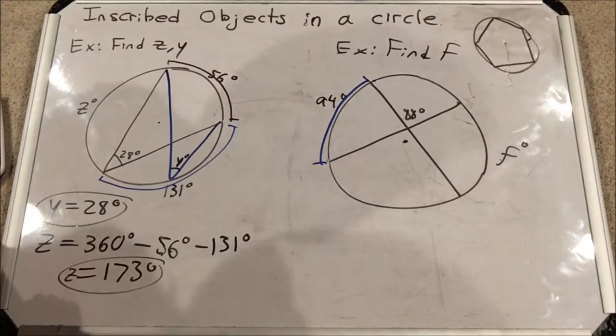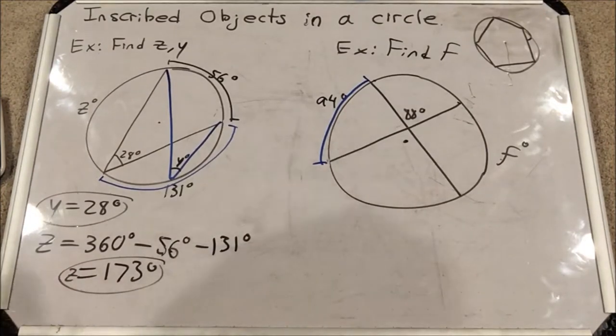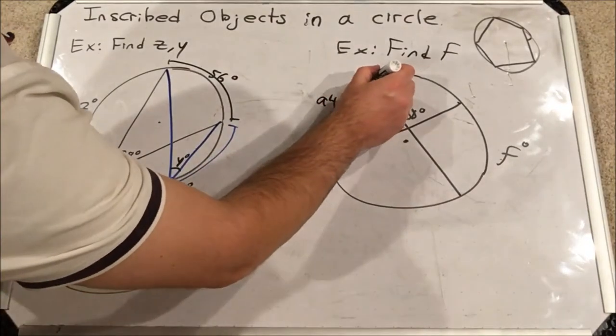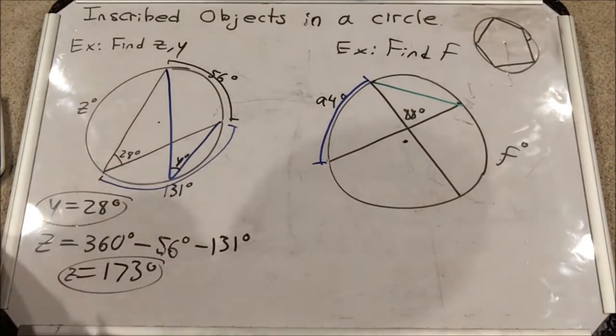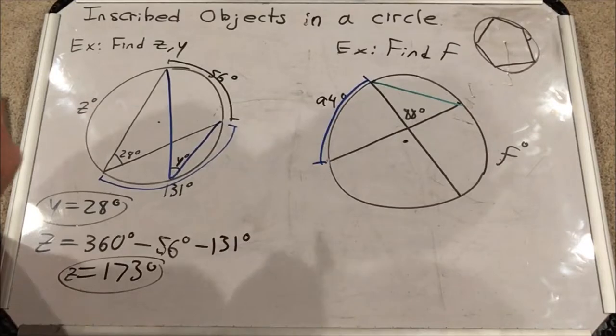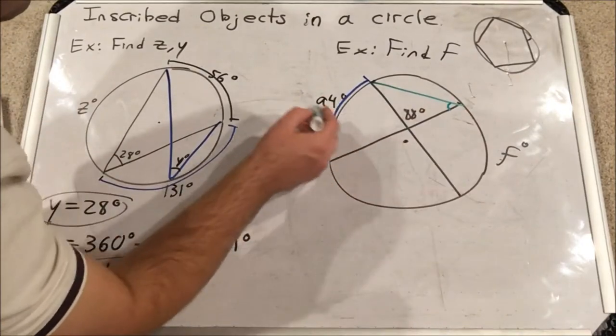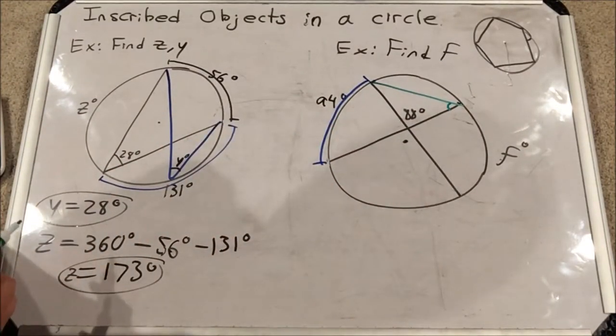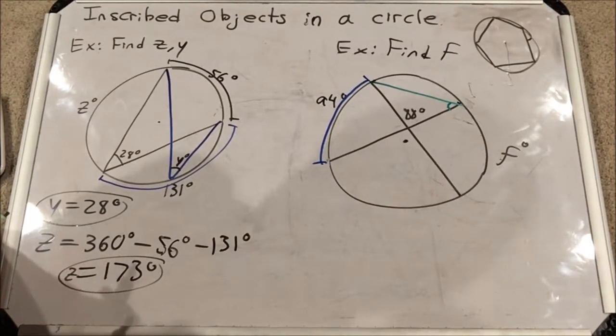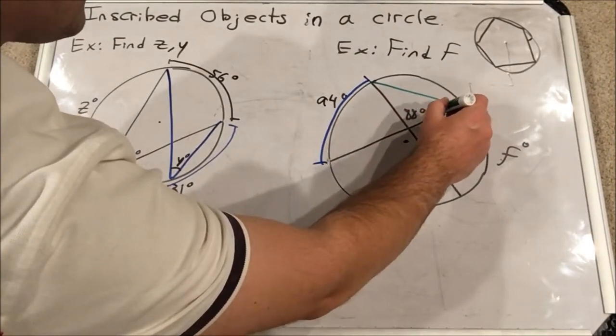In some more challenging problems, you actually have to construct lines in the circle or whatever figure you have, and I'm going to do that right now. I'm going to construct this right here. Now what this does is make some really interesting inscribed angles. I want you to notice that this green line and this black line are the edges of an inscribed angle to the arc whose degree measure is known, 94 degrees. If you split that into two, you get 47 degrees. So this angle right here is 47 degrees.